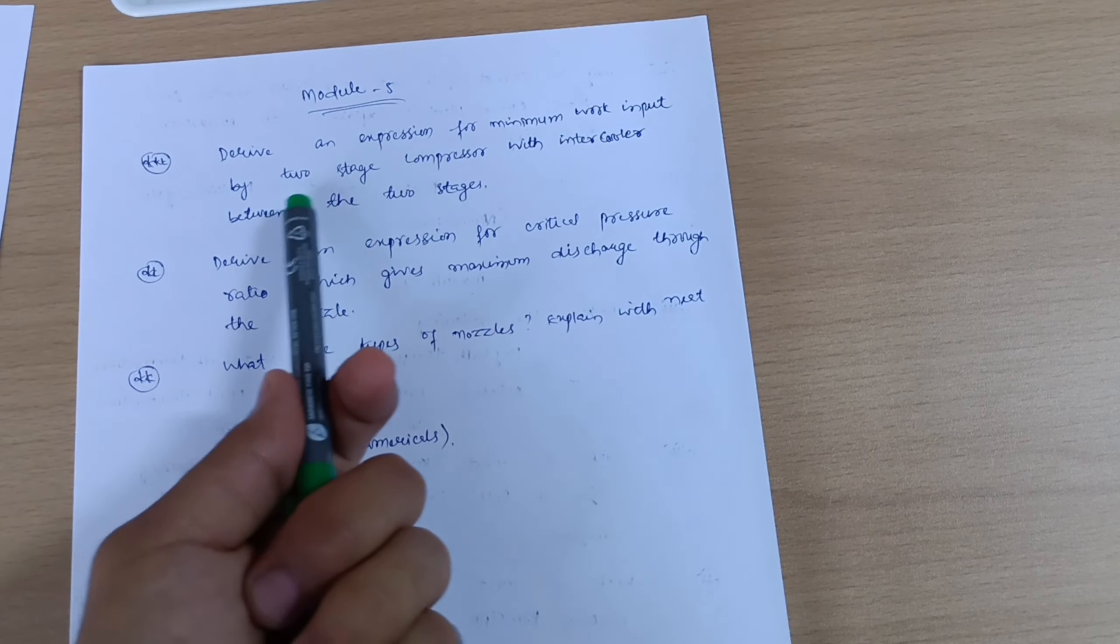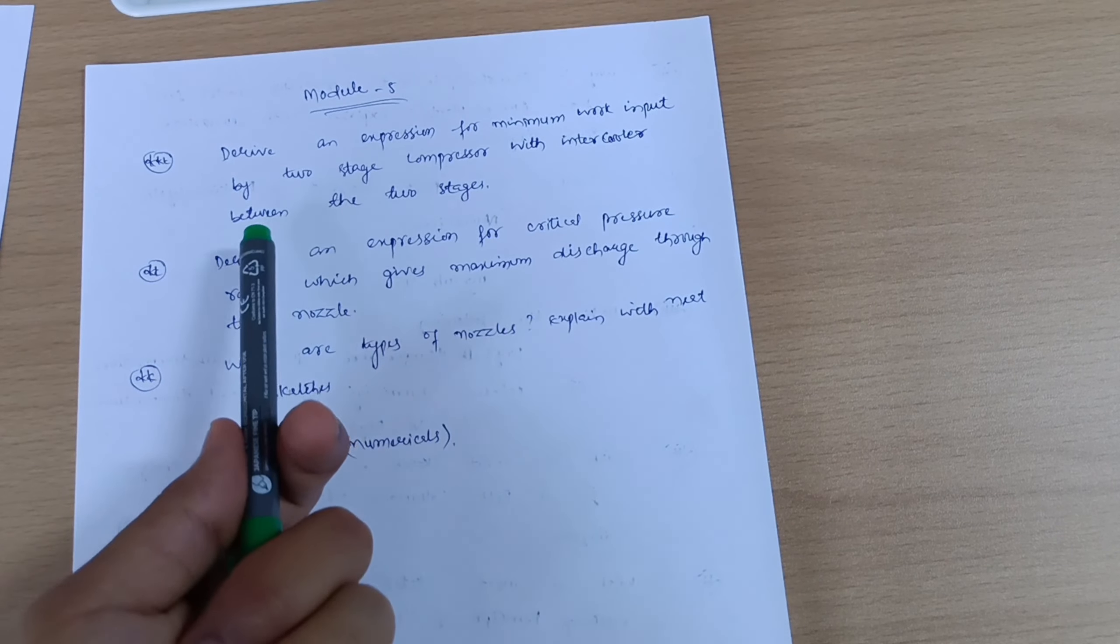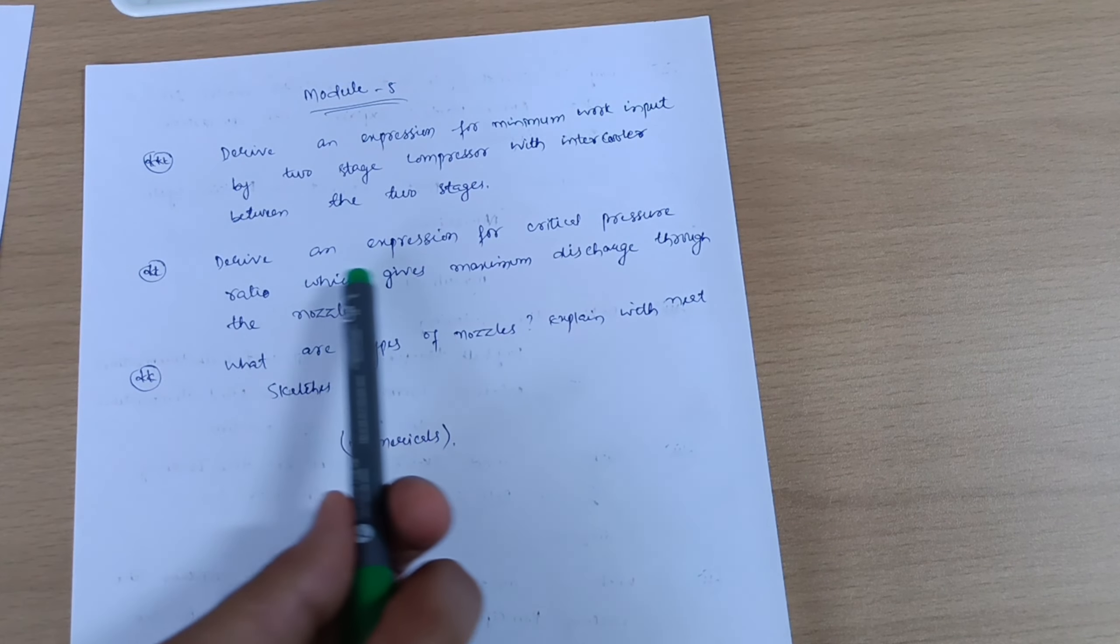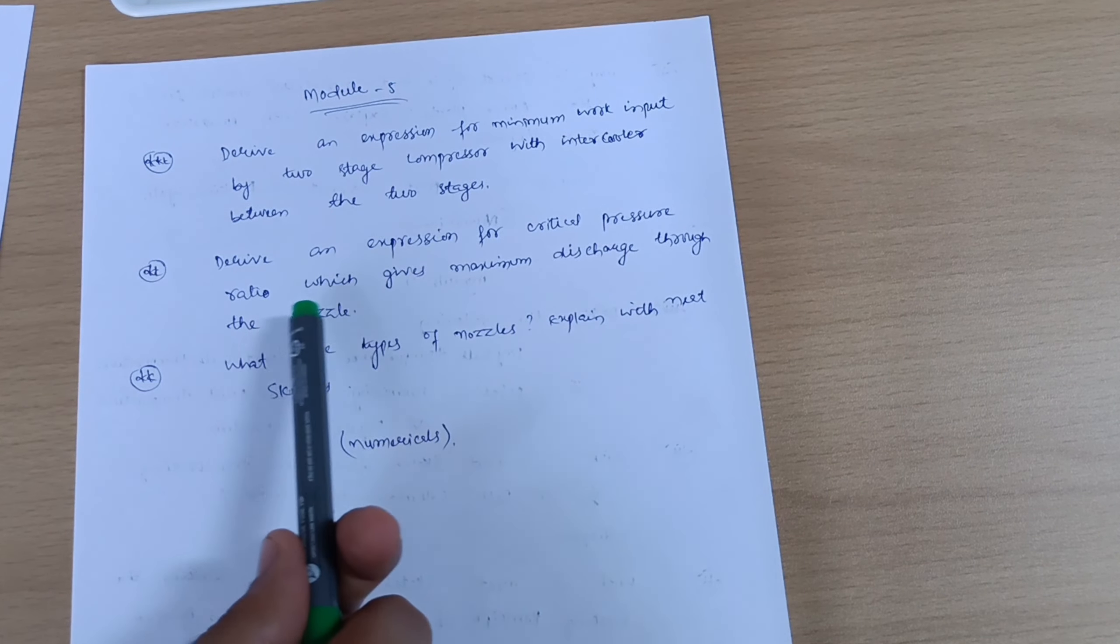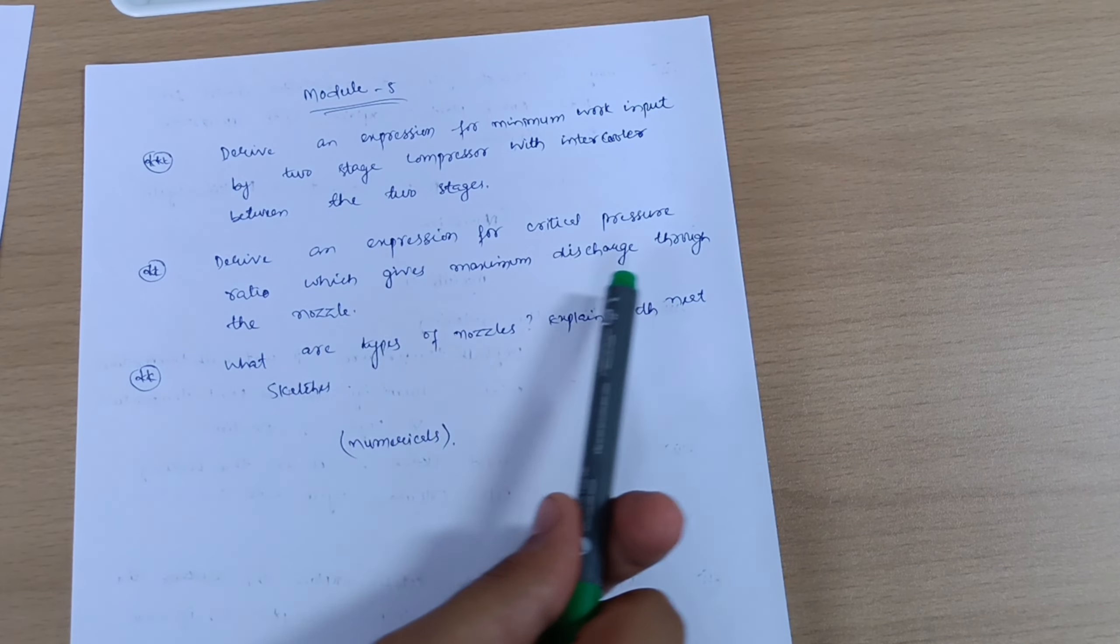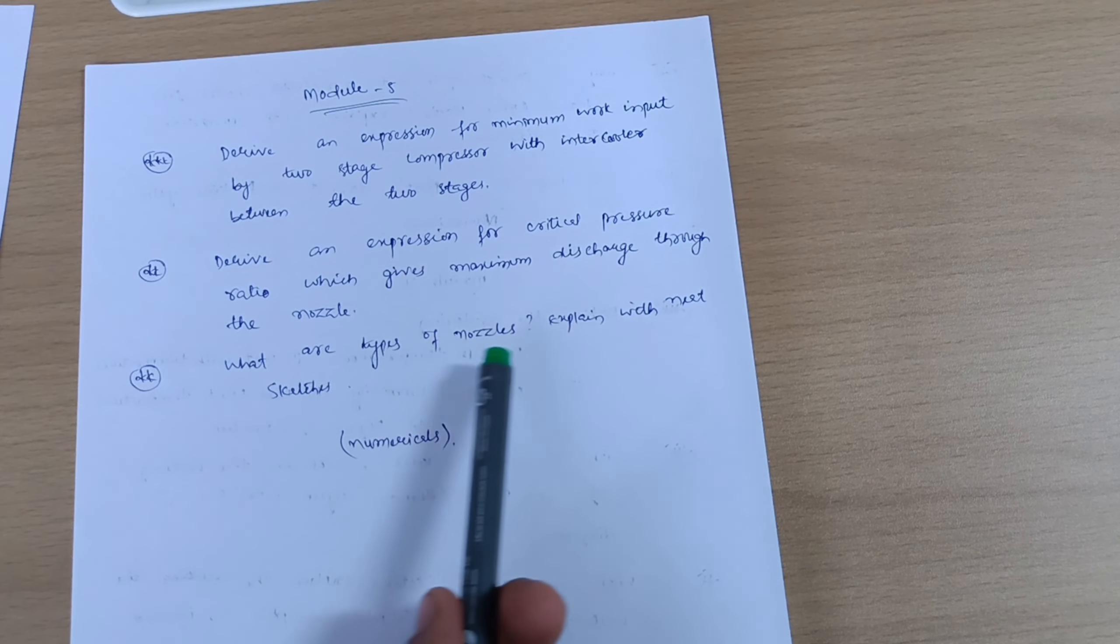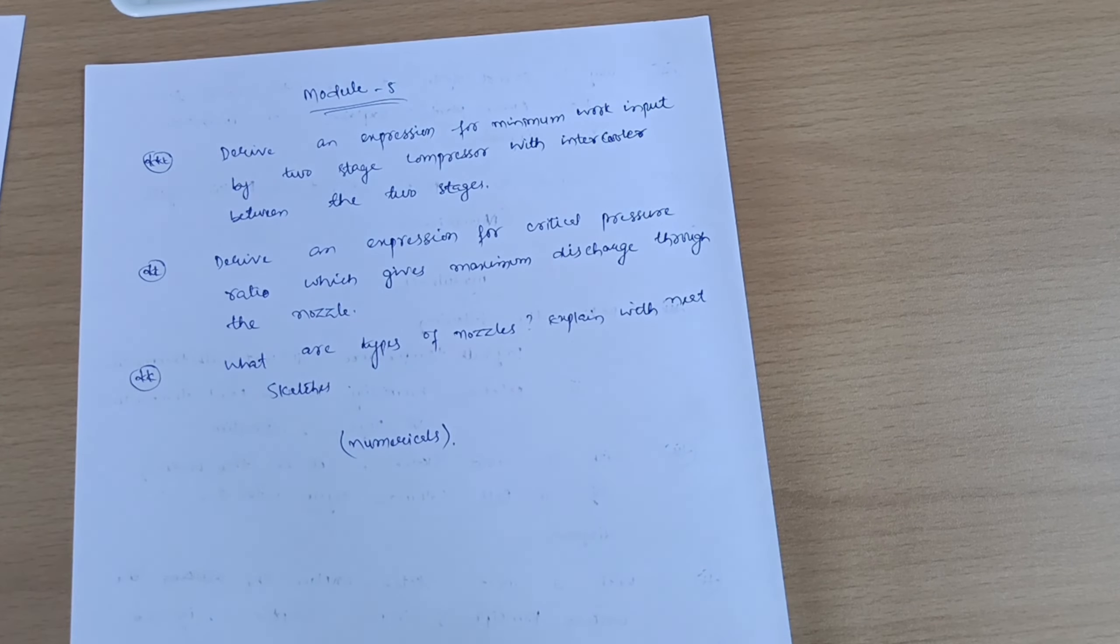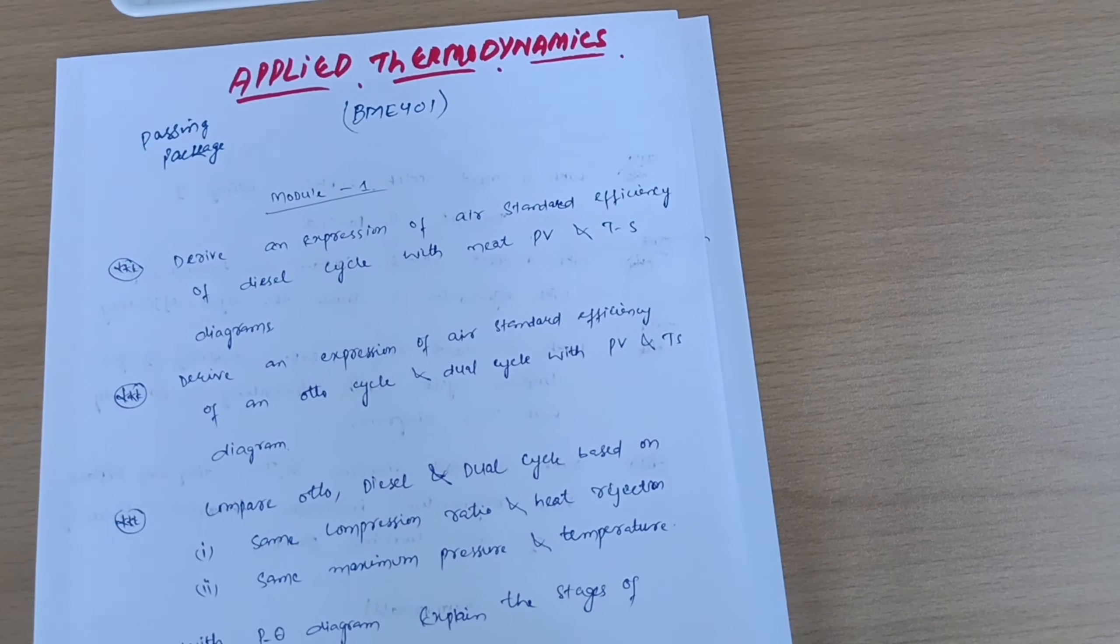Now if I talk about Module 5, there are only three theoretical questions which may ask for 10 marks. There are: an expression for minimum work input by two-stage compressor with intercooler between the two stages, derive an expression for critical pressure ratio which gives maximum discharge through the nozzle, and what are the types of nozzles? Explain with neat sketch.